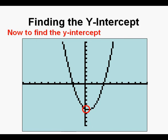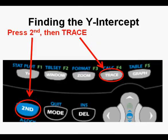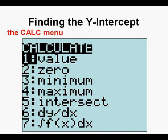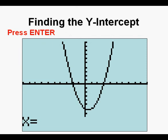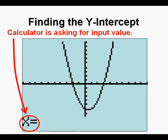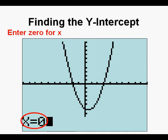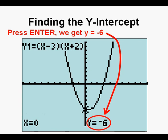To find the y-intercept using the calc menu, press second then trace. Here is the calc menu again — option one, value, is highlighted. Press enter. The calculator shows x equals at the lower left, asking for an x input value. Enter zero to get the y-intercept and press enter. We get y equals negative six when x equals zero — that is the y-intercept.